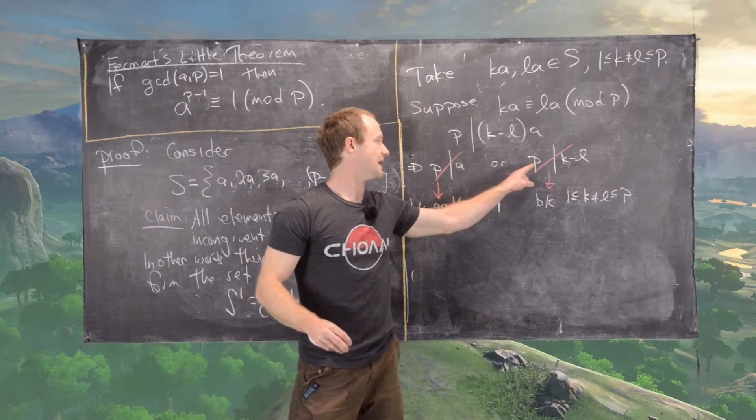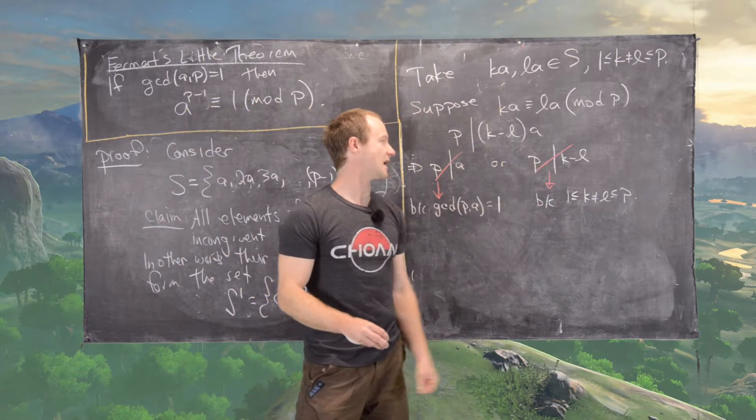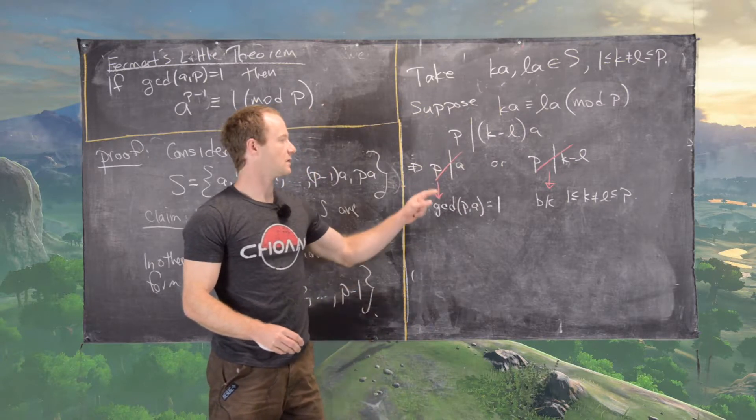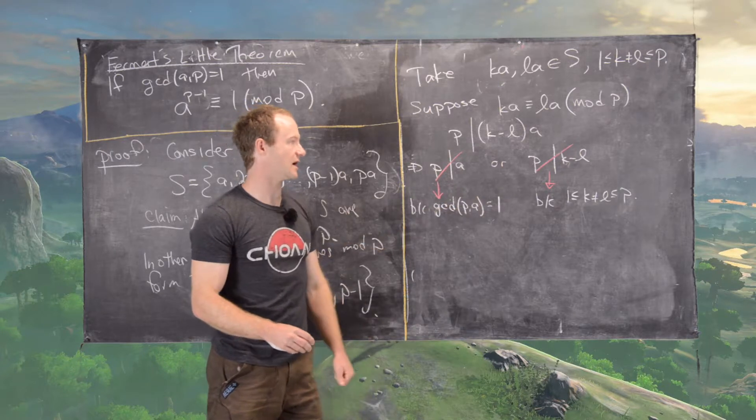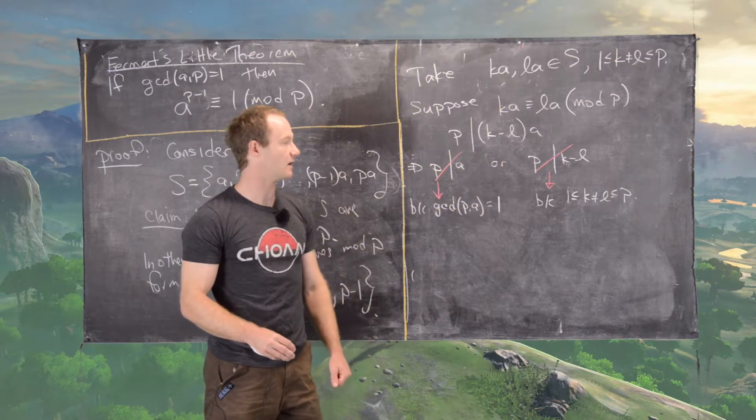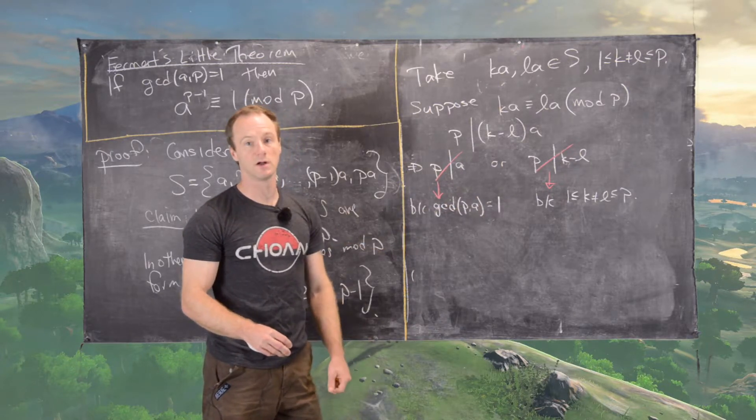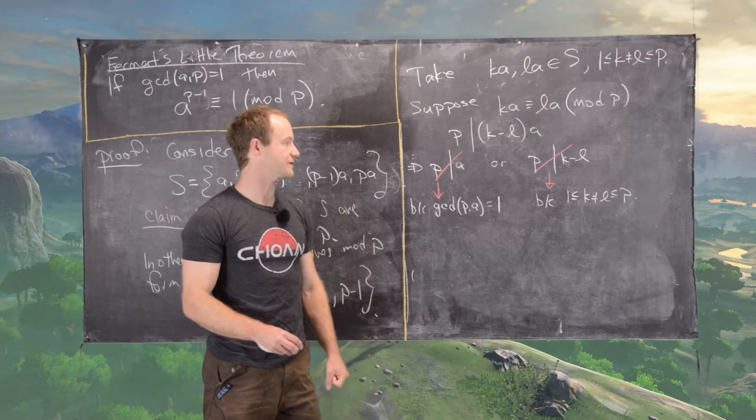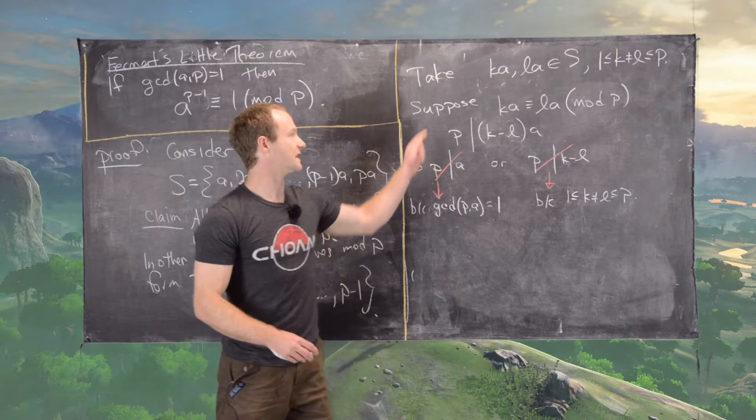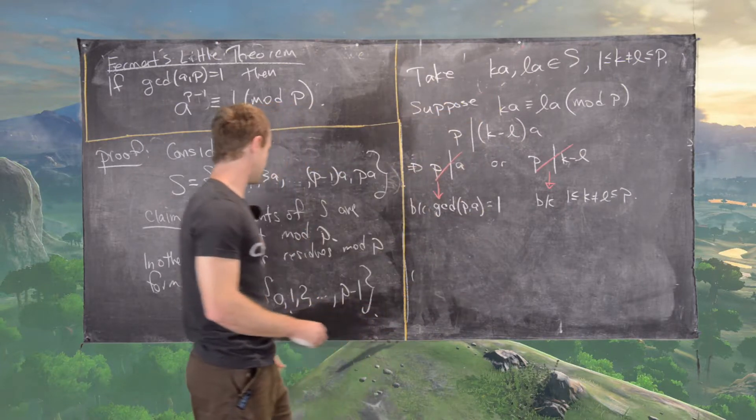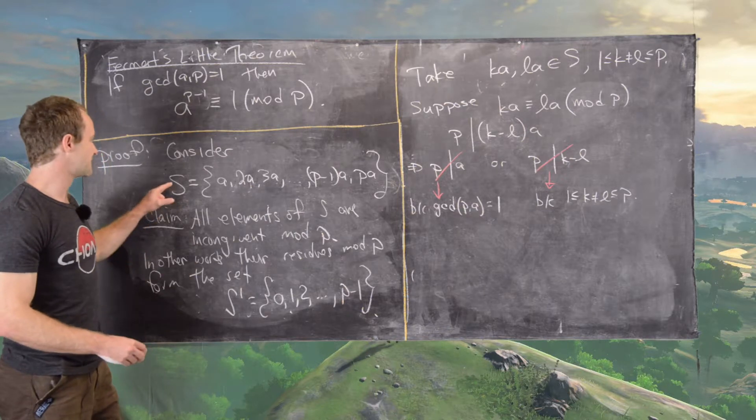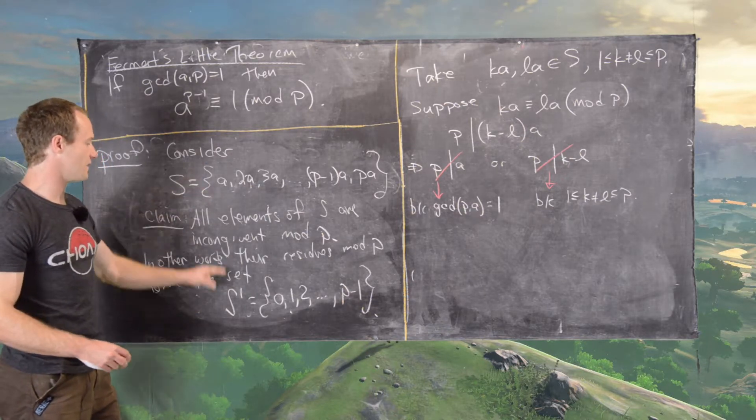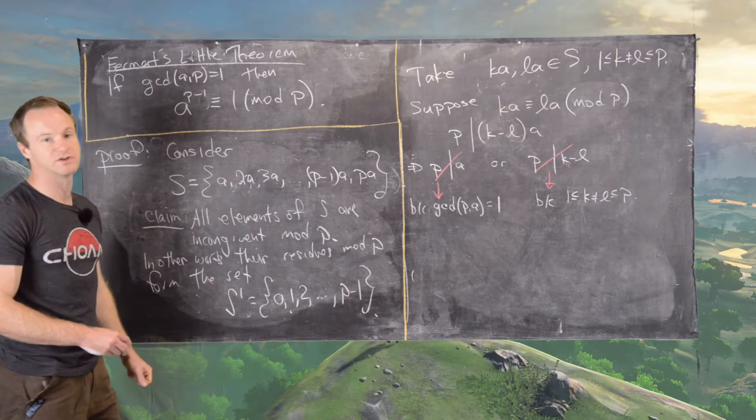So what this would mean is that K minus L would have to be either exactly equal to P, which is not possible given this setup of the values of K and L, or it would need to be a multiple of P, which is again not possible given this setup of values of K and L. So we get that these are all incongruent modulo P. So that means this set S and this set S prime are the same in terms of residues modulo P.